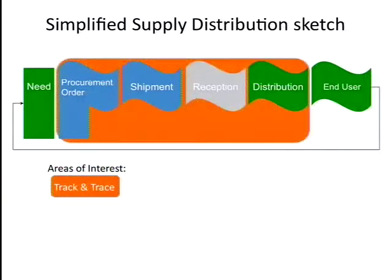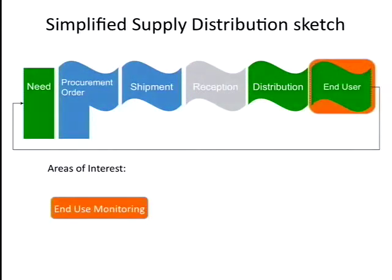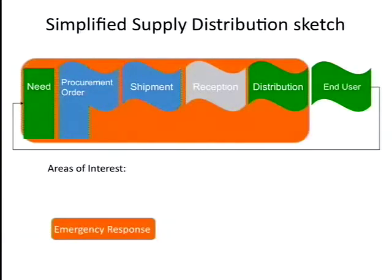We will be focusing in three areas. The first one is track and trace, which comprises all of these operations. Second will be end-use monitoring, which is something that is not being done and which we would like to use to feed back to the moment of procurement and procure the goods that are exactly needed. And the last one is emergency response, which is the most general of all and comprises the most operations.